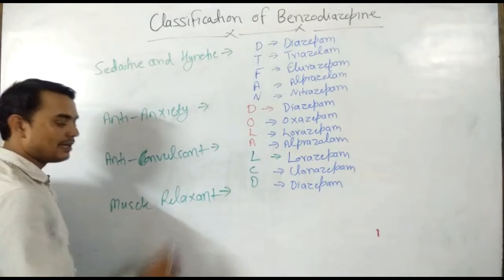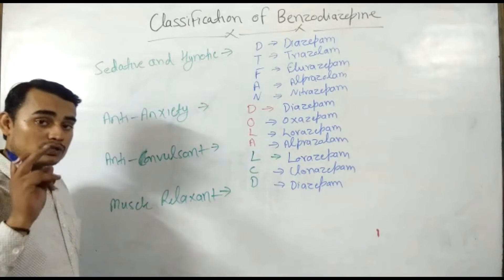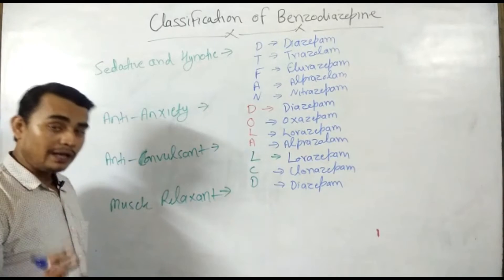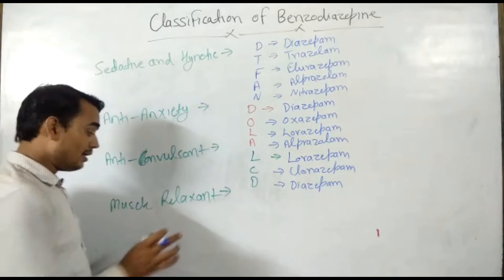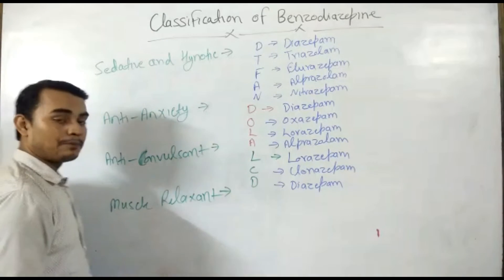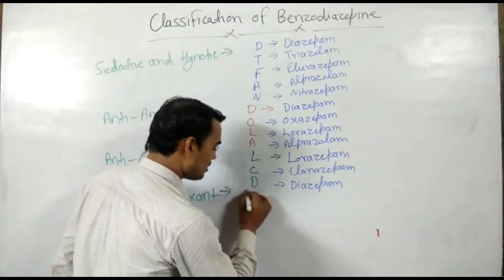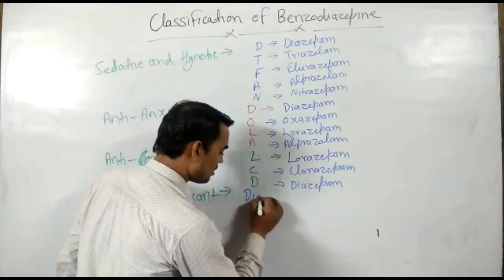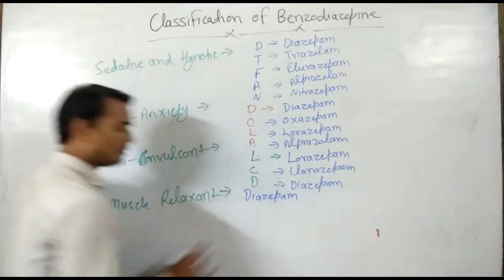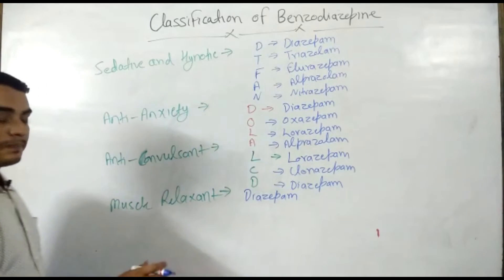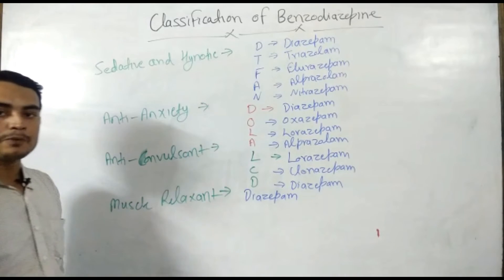The next subclass is muscle relaxant. There is only one benzodiazepine which has muscle relaxant property, and that is Diazepam. Diazepam has muscle relaxant property.